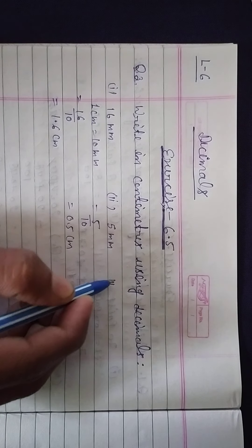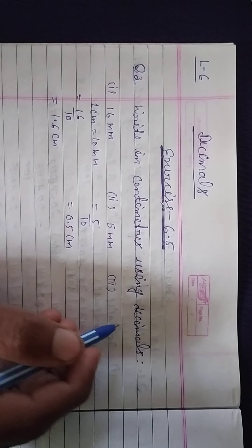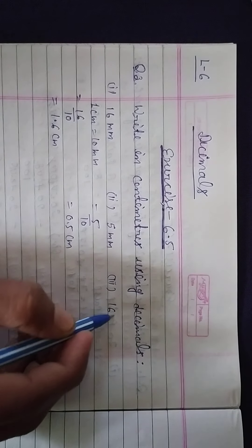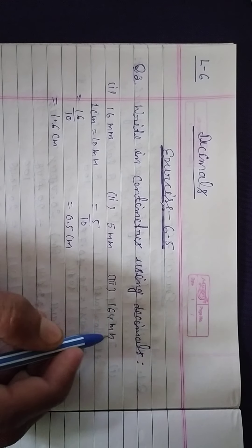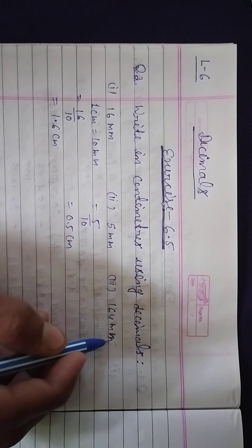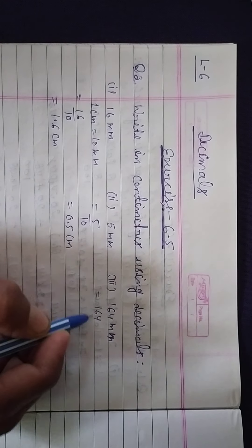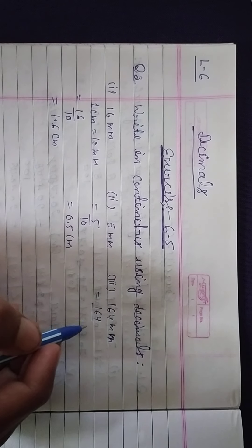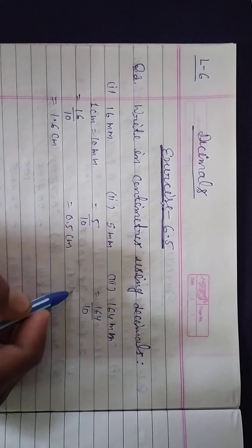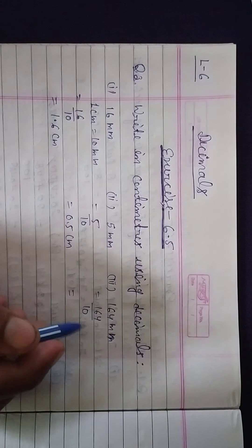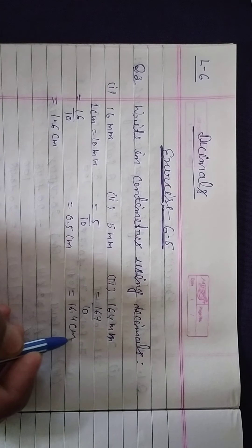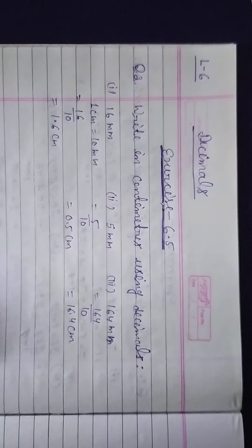Question number 3 is 164 millimeters. Which number should we divide by? Why 10? Because 1 centimeter is equal to 10 millimeters, so we divide by 10. So 164 divided by 10 gives 16.4 centimeters. That is our answer.